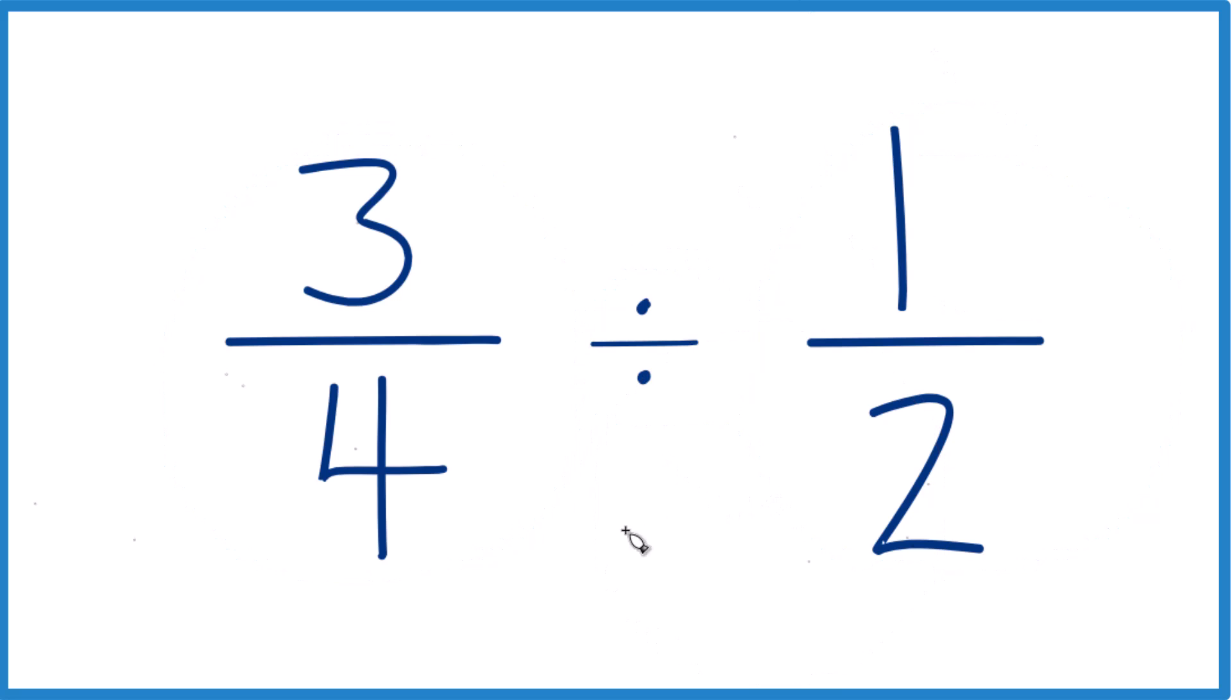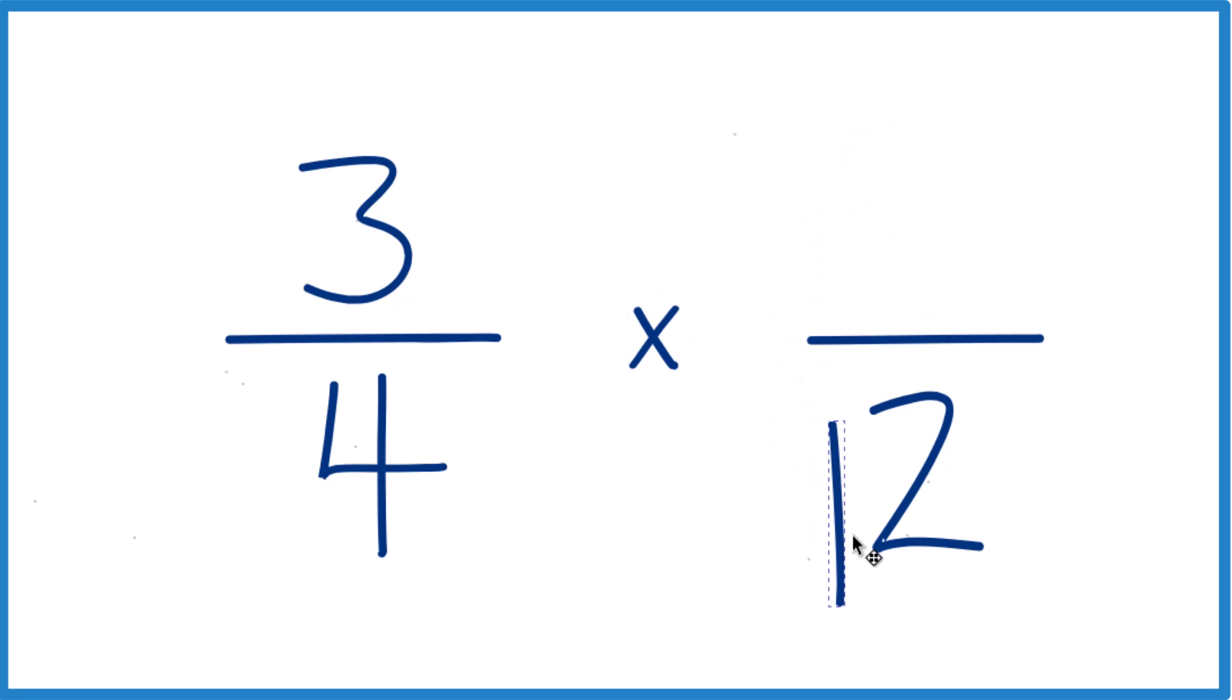When we're dividing fractions, we can change the division to multiplication. If we multiply by the inverse, we move the numerator to the bottom and the denominator up to the top. It's the multiplicative inverse, so we just switch them.